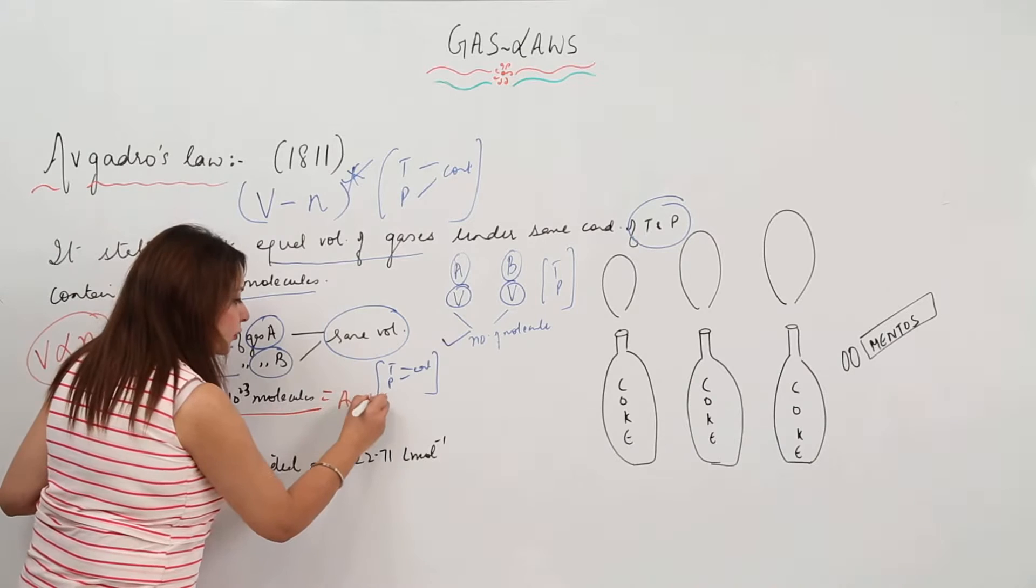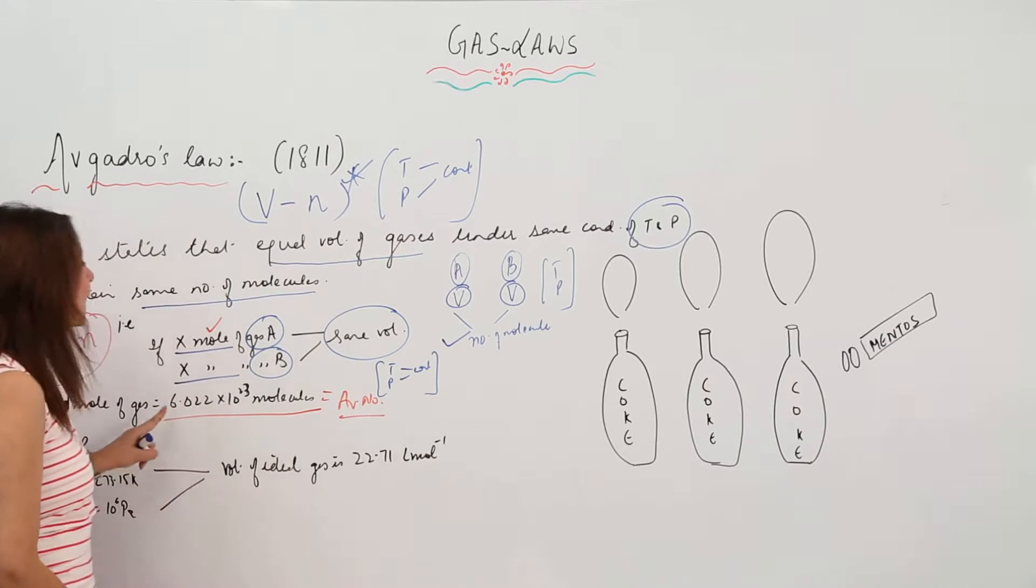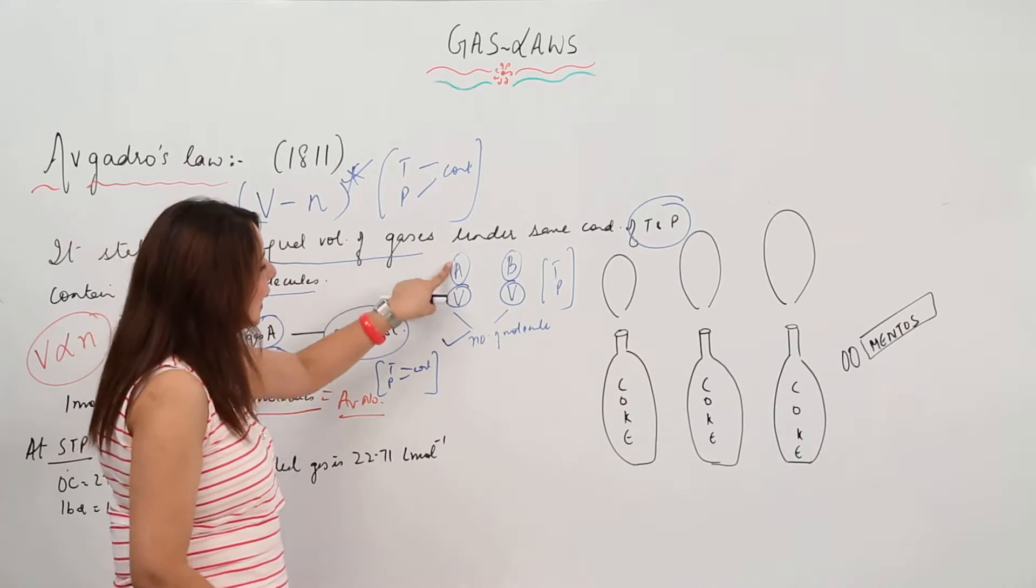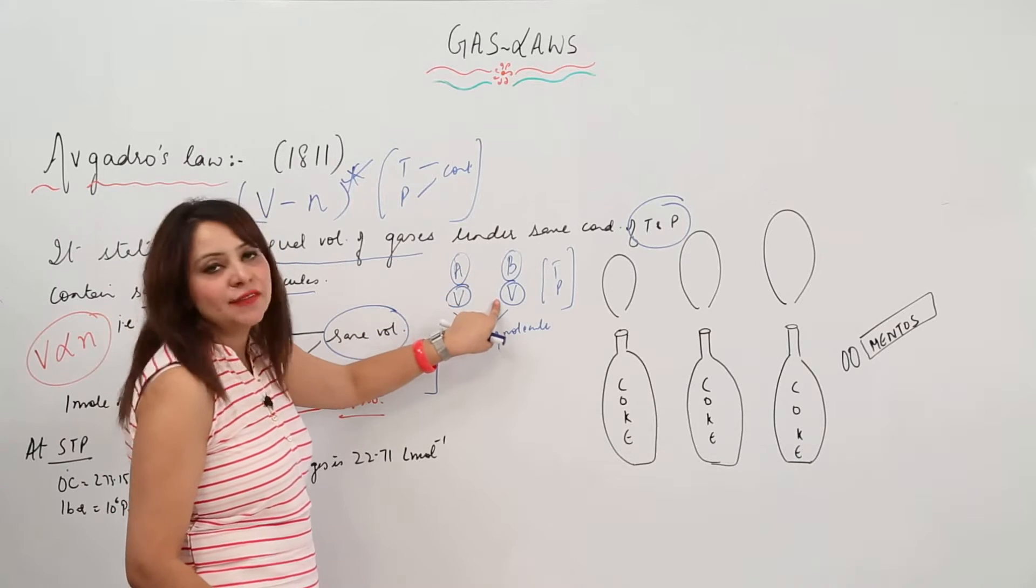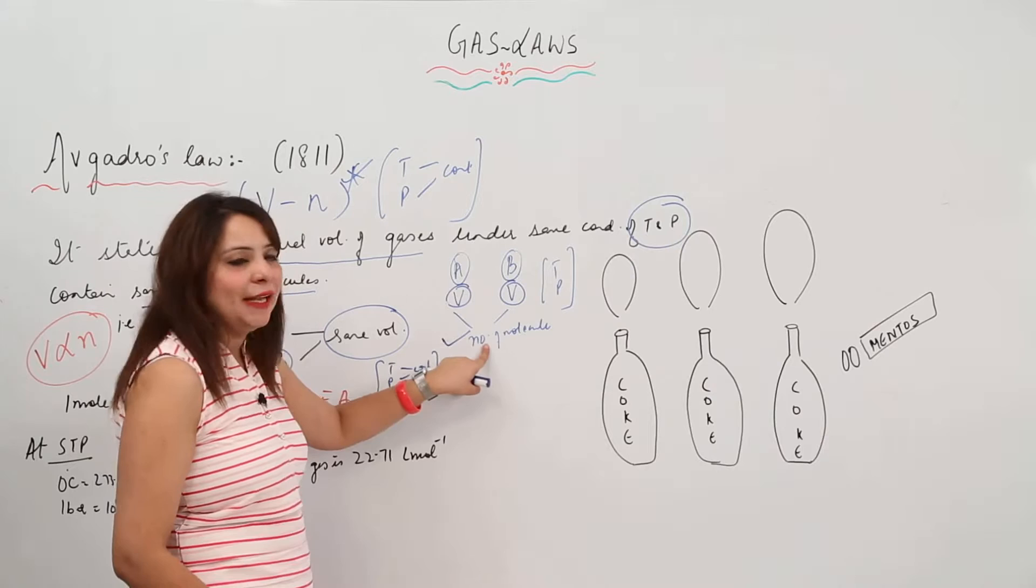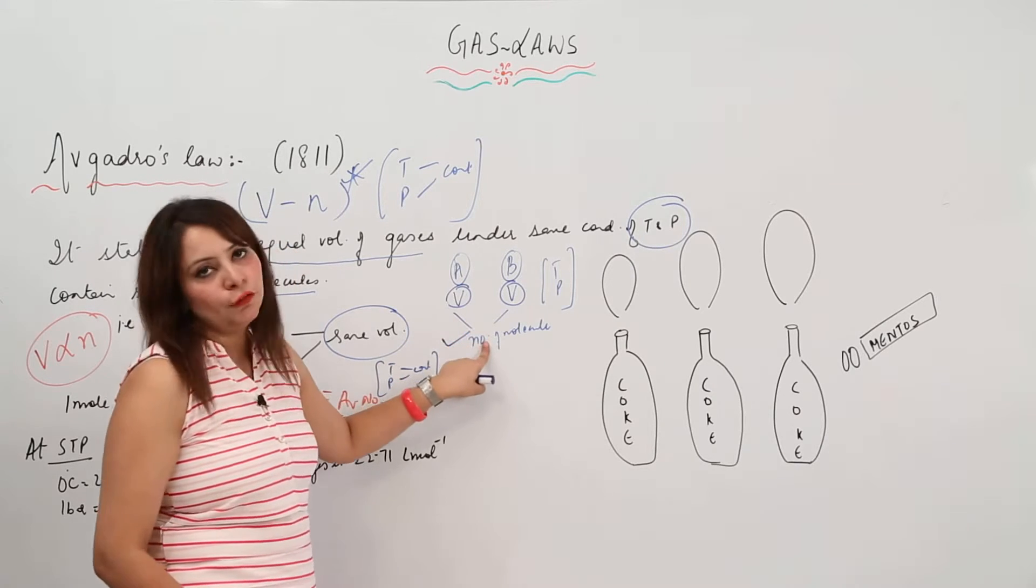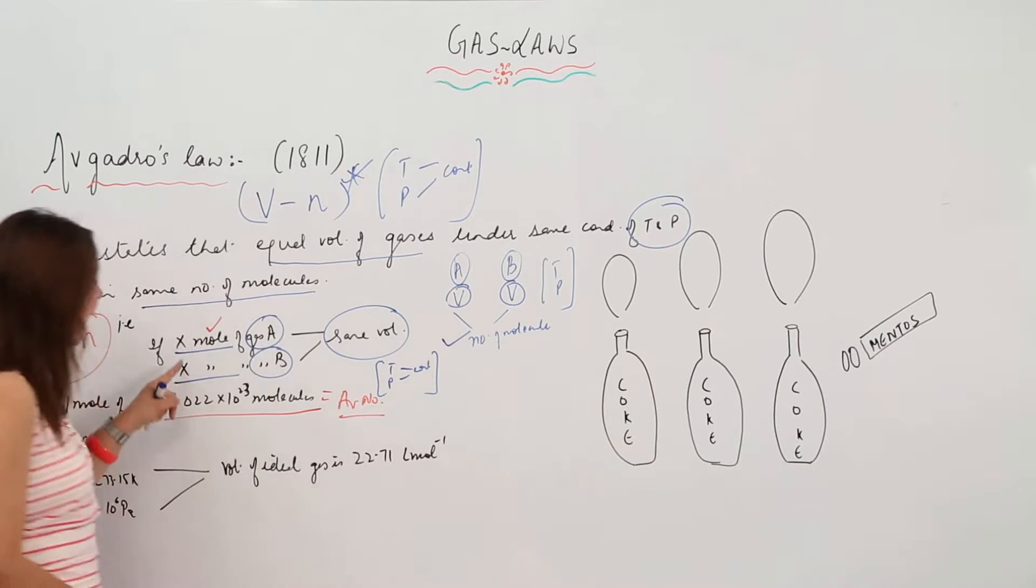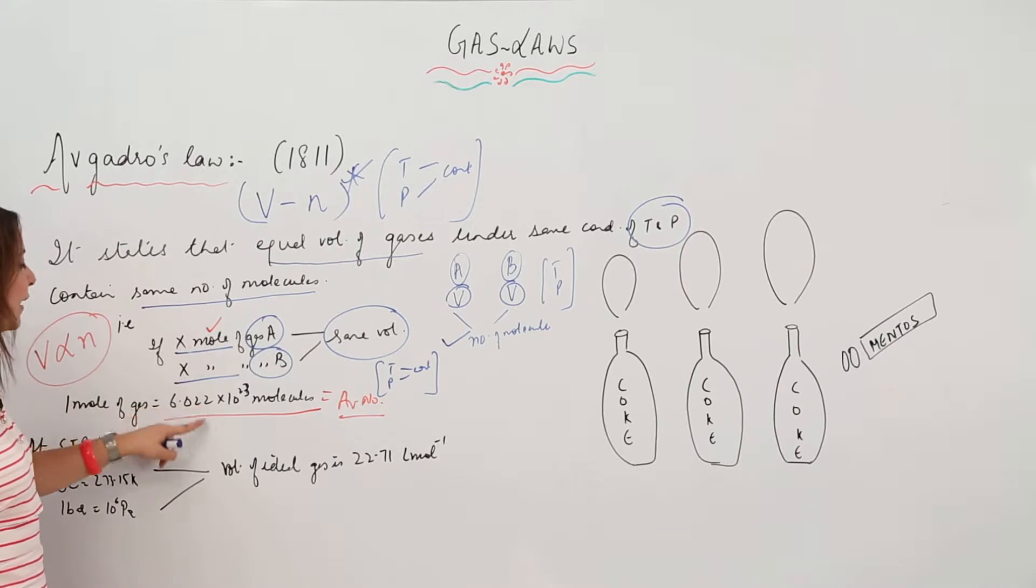So if gas A has volume V and gas B has the same volume, they will contain the same number of molecules. Likewise, if we have X moles of A and X moles of B, they are going to occupy the same volume.